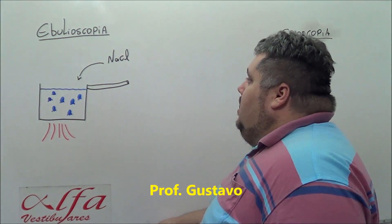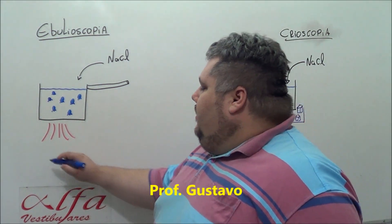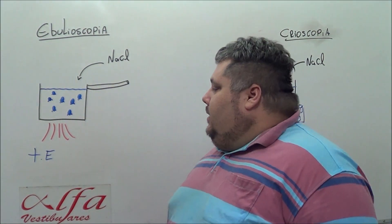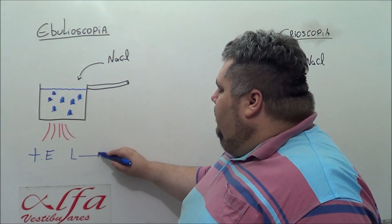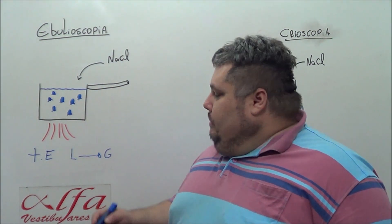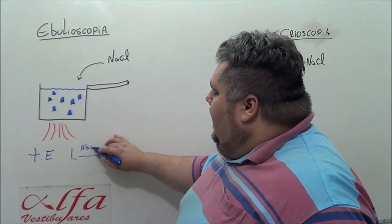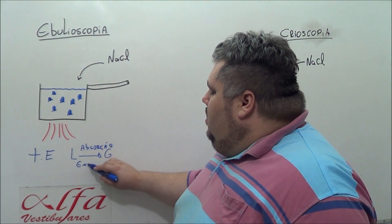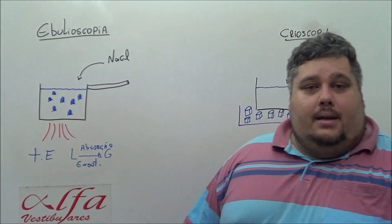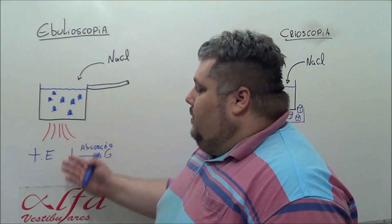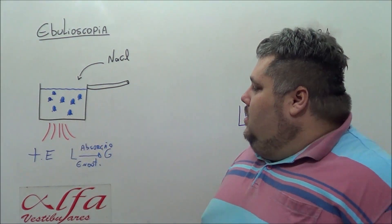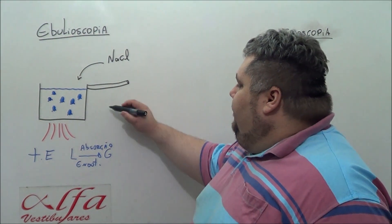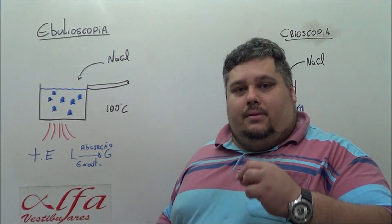Ebullioscopy refers to ebullition, so we are going to talk about temperature of ebullition. What is ebullition? It is the passage of the liquid to the gas and this occurs with absorption of heat, an endothermic process. We already know that water will evaporate at sea level if the temperature reaches 100 degrees Celsius.